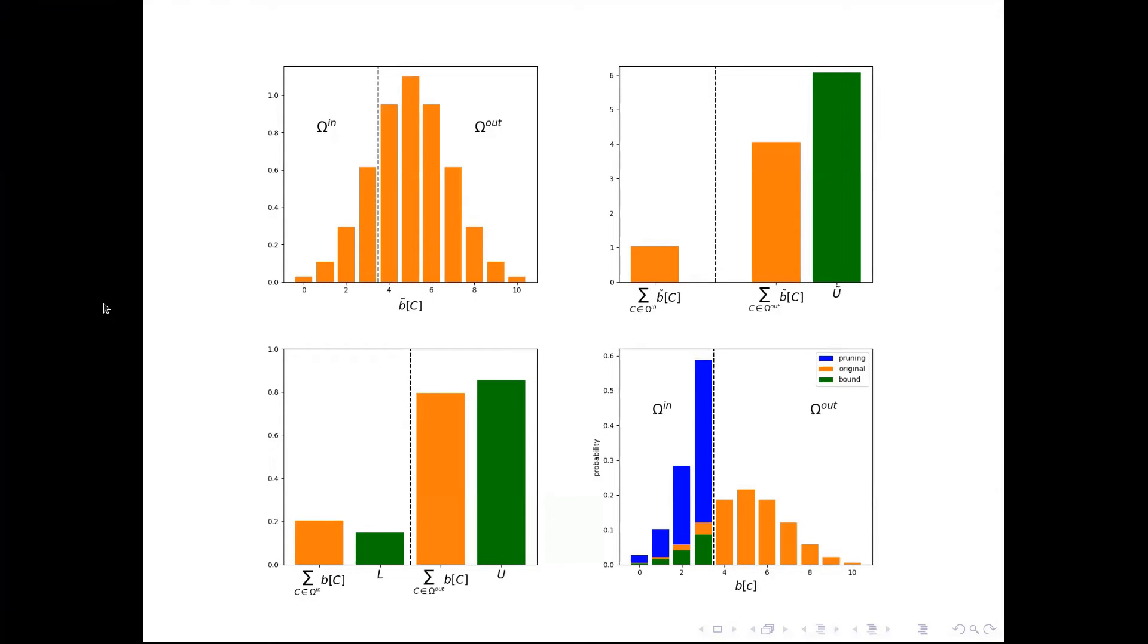In general, what we do is as follows. We start with unnormalized belief here and omega in and omega out. We could, and I will not get into details, but we could bound the sum over the omega out probabilities.